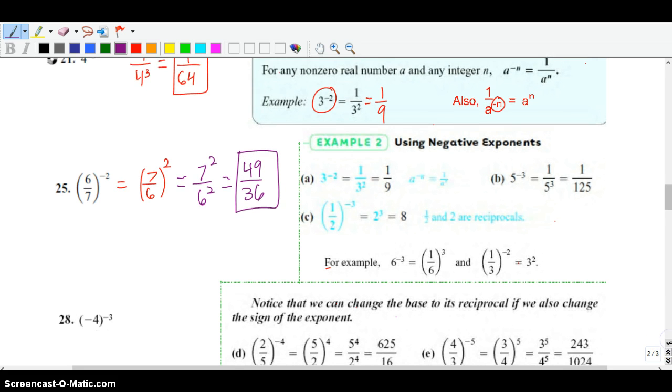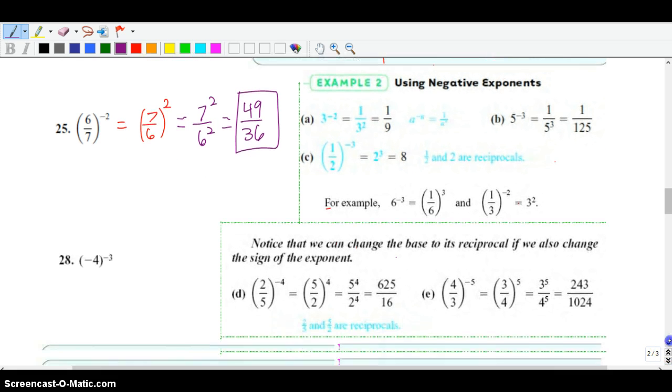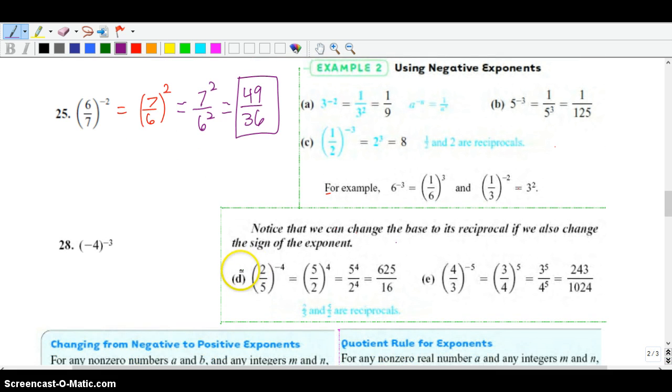Kind of like on the previous section where if you were squaring a parenthesis, everything receives that power. It's going to be the same thing here. So it becomes 7 squared over 6 squared, 49 over 36. Like I said, you can kind of see some of these examples down here that kind of go with it. You can kind of see D is kind of similar to what we just did there, and so is E, and those are in the book.